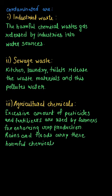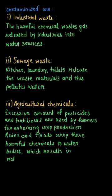So again, we need to understand these three types: industrial waste, sewage waste, and agricultural chemicals can contaminate water in different ways. We need to be very careful about using them. Thank you.